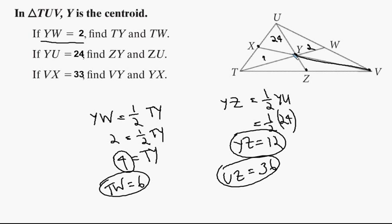VY is the distance from the vertex to the centroid, which is two-thirds of the whole thing. So we know VY equals two-thirds of VX. Well, we know what VX is, it's 33. And 33, we can divide by 3 is 11, multiply by 2, that's 22. So VY is 22.